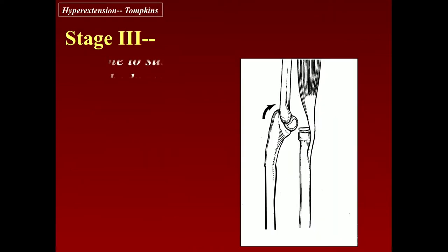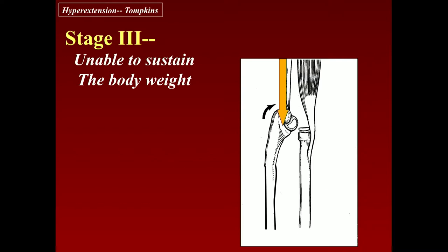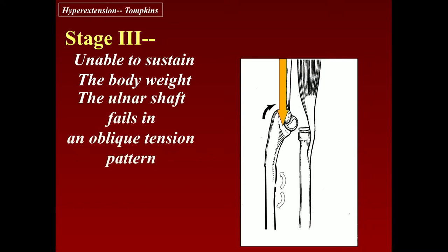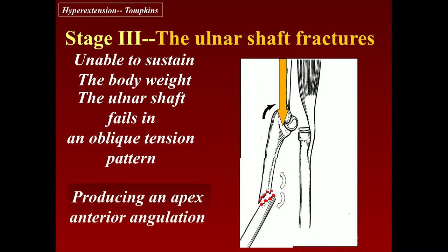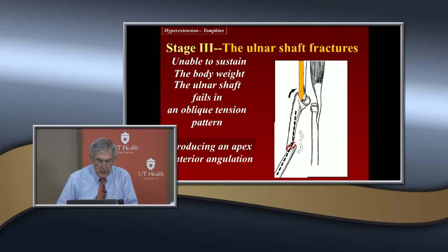That leads to the third stage: the ulna is unable to sustain the body weight, so it fails in tension. It bends and fails in an oblique fashion. In children, the concave surface remains intact, so it remains as a green stick type of fracture. But it produces an apex-anterior angulation that fails in tension.